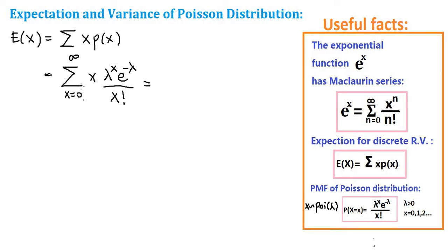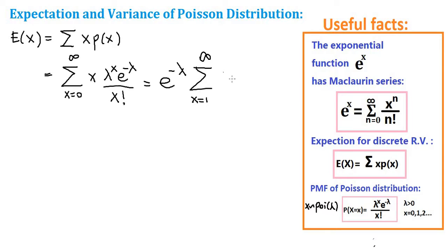Now we're going to adjust the lower limit of summation to 1, because when x equals 0 it makes the whole term 0. We can also take e to the negative lambda out in front because it has no x variable. So we have e to the negative lambda times the summation from x equals 1 to infinity of x times lambda to the x over x factorial.